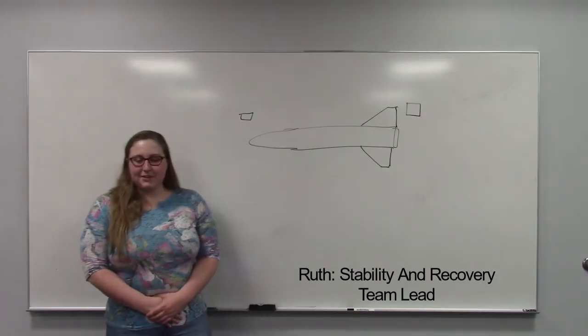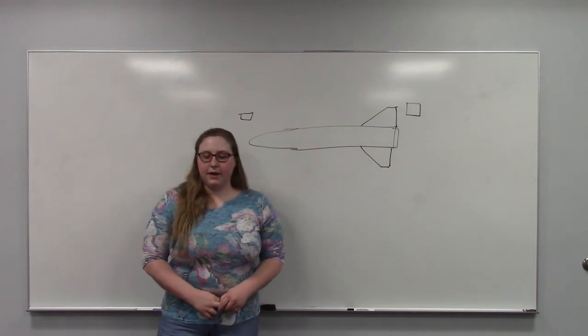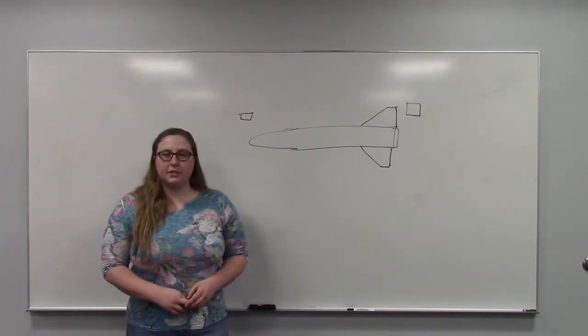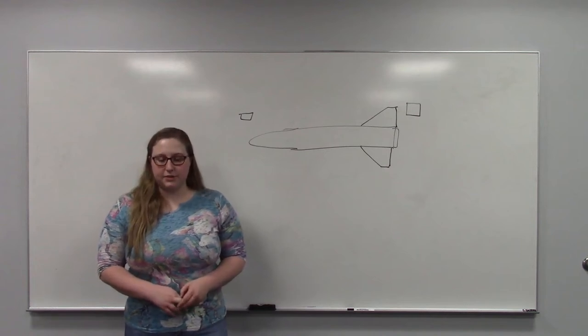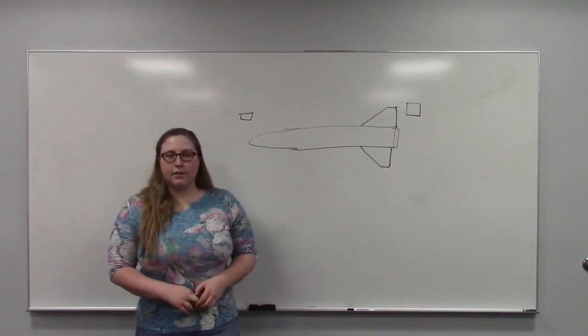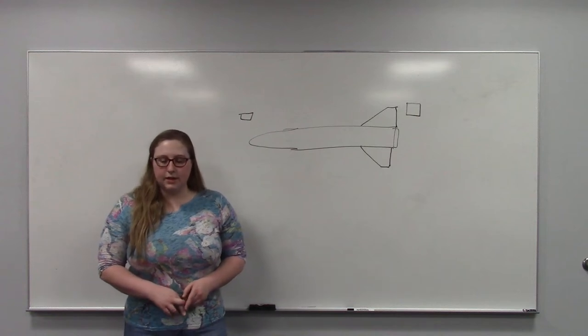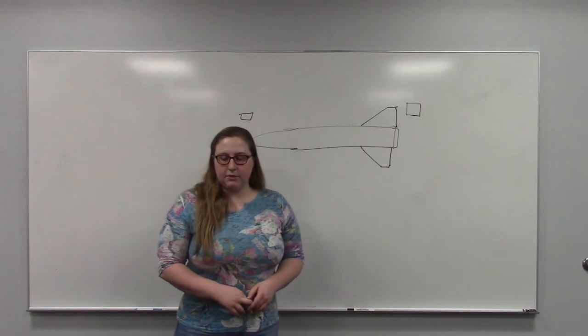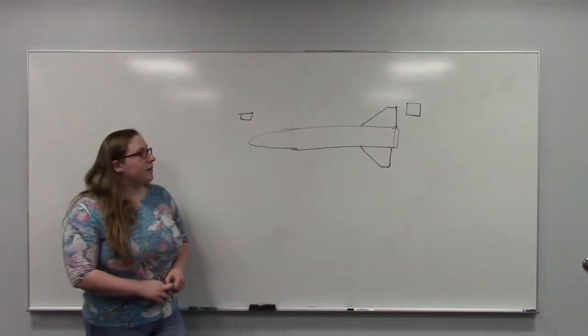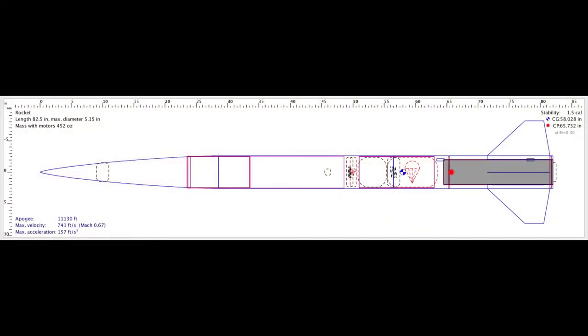Hello, I'm Ruth, a senior at WSU majoring in aerospace engineering. I'm the advisor in stability and recovery lead for Wichita State Rocket Club's HOPE project, which stands for Height Optimized Payload Ejector. The rocket is intended to fly between 9,000 and 10,000 feet and deploy a pod at apogee containing the golf ball to rapidly return to the ground.